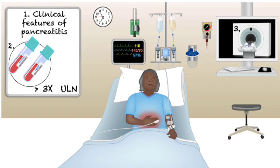Nailing down the etiology is absolutely paramount — if you don't find and treat the underlying cause, pancreatitis will likely come back, often worse the next time. The most common causes, together accounting for more than two-thirds of cases, are gallstones and alcohol. Those are your prime suspects right out of the gate.